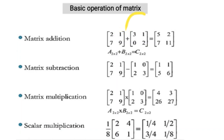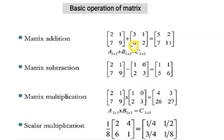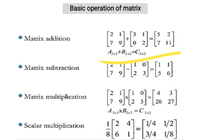The second element of the first row will be added to the second element of the first row of the second matrix: 1 plus 1 equals 2. The first element of the second row: 7 plus 0 equals 7. And 9 plus 2 equals 11. That is matrix addition — a very simple operation.